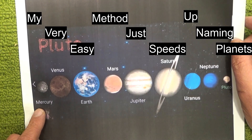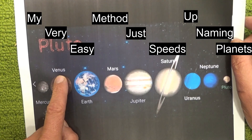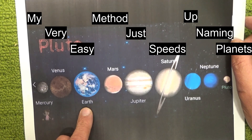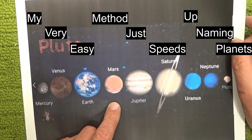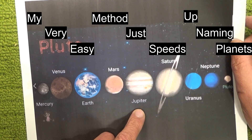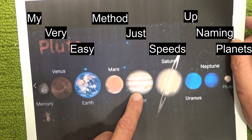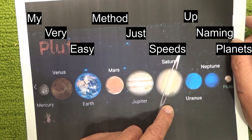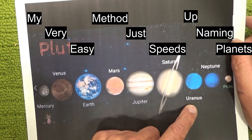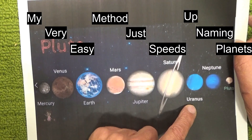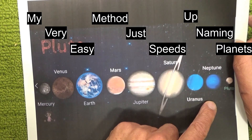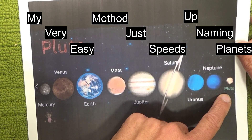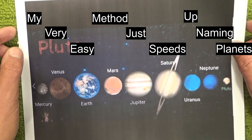My — M is for Mercury. Very — V is for Venus. Easy — E is for Earth. Method — M is for Mars. Just — J is for Jupiter. Speeds — S is for Saturn. Up — U is for Uranus. Naming — N is for Neptune. And Planets — P is for Pluto.